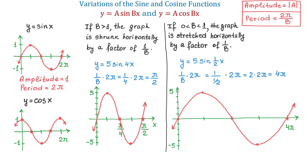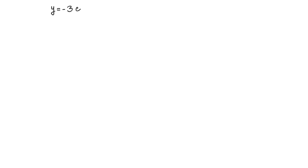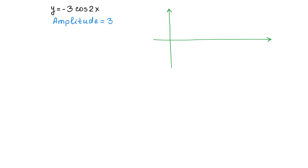Now let's see the graph. As we see here, the amplitude is 5 but the graph is now stretched horizontally and the period is 4 pi. Now let's solve one more example where we will find the amplitude, the period, and the coordinates of the 5 points over one period, and then make the graph. Let's have the function y equals negative 3 cosine of 2x. The amplitude is the absolute value of negative 3, which is positive 3. Because the amplitude is 3, the maximum value will be positive 3 and the minimum will be negative 3.